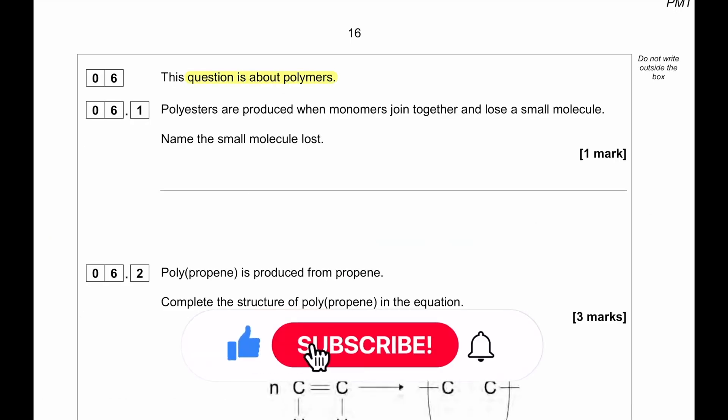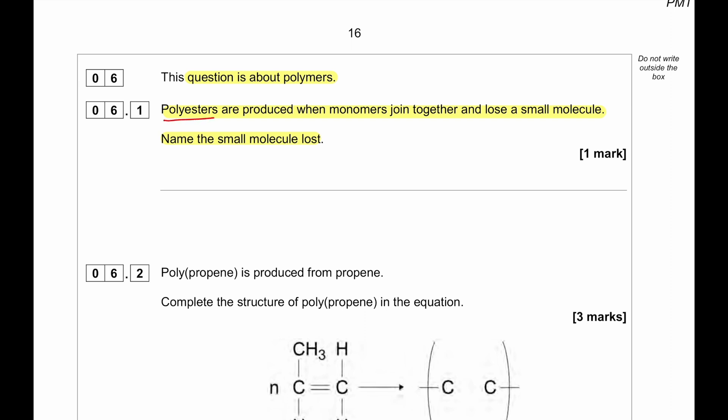This question is about polymers. Polyesters are produced when monomers join together to lose a small molecule, name the small molecule lost. When polyester forms, these are condensation polymerization. So the small molecule that will be lost is water.